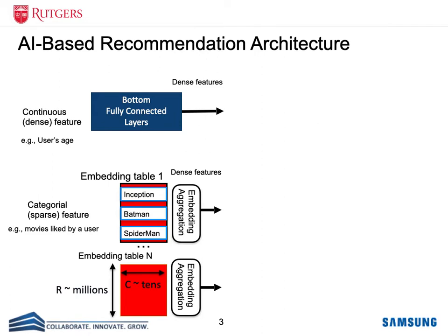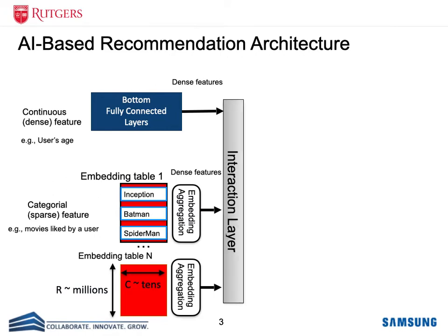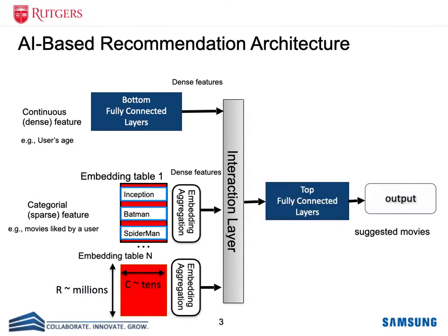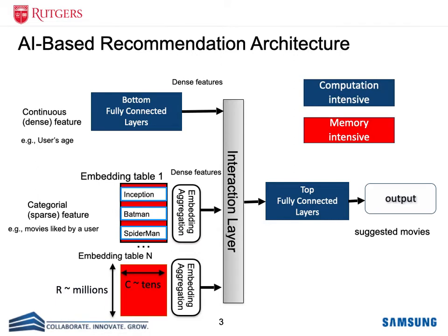After accessing the entries in the table, we need to aggregate their features, or columns of the table, to get the final dense features. Once we have all dense features from both fully connected layers and embedding tables, we combine them and pass them through another series of fully connected layers before we make the final prediction. As you can see in this figure, there are two types of operations: the fully connected layers are computation intensive, whereas the operations on embedding tables are memory intensive.